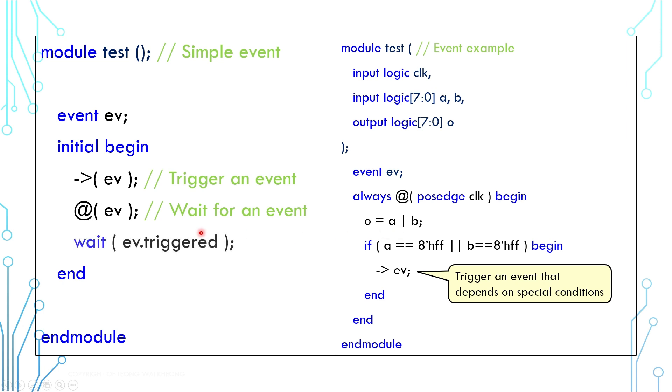Besides @, event can also be used with wait, but since wait requires an expression, you cannot use event variable as is. It has to use a property called triggered which can be accessed using dot operator. Note that there is a slight difference when it comes to using these two statements.